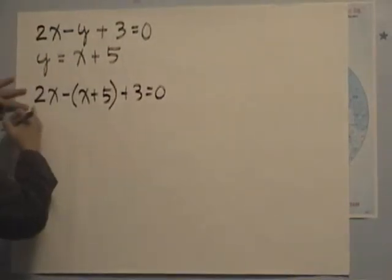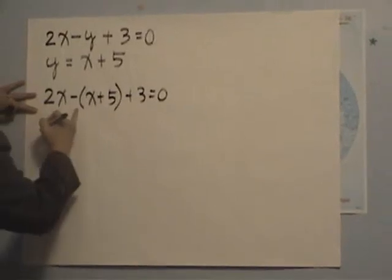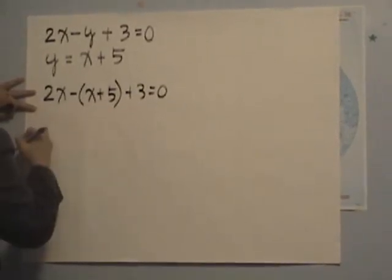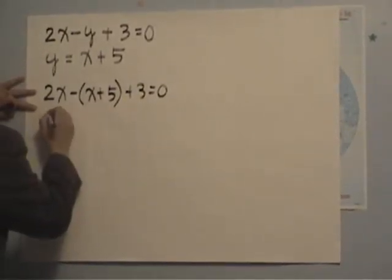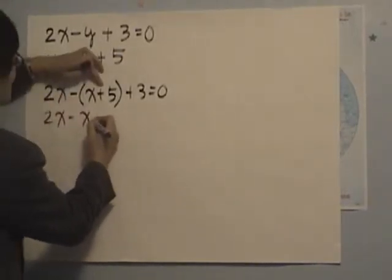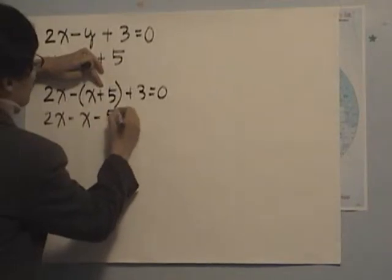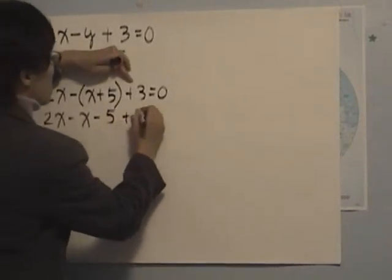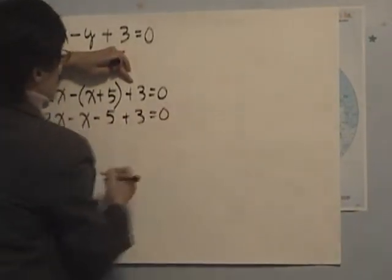And then, in this equation, we have parenthesis, following the order of operation, we need to get rid of parenthesis. So 2x minus x, negative positive is negative. So negative 5 plus 3 equals to 0.